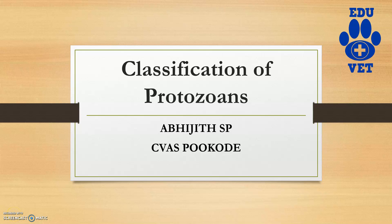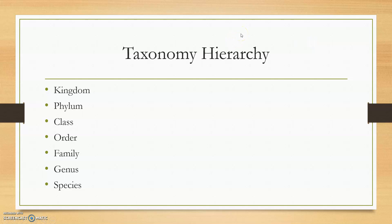Hi guys, welcome back to Eduard channel. Today we will be discussing the taxonomical hierarchical classification of protozoans — the microbes present in the kingdom Protozoa. This video will completely detail the classification and taxonomy of protozoa based on the latest, fourth edition of Veterinary Parasitology by M.A. Taylor and R.L. Cope. The taxonomical hierarchy is: kingdom, phylum, class, order, family, genus, species.